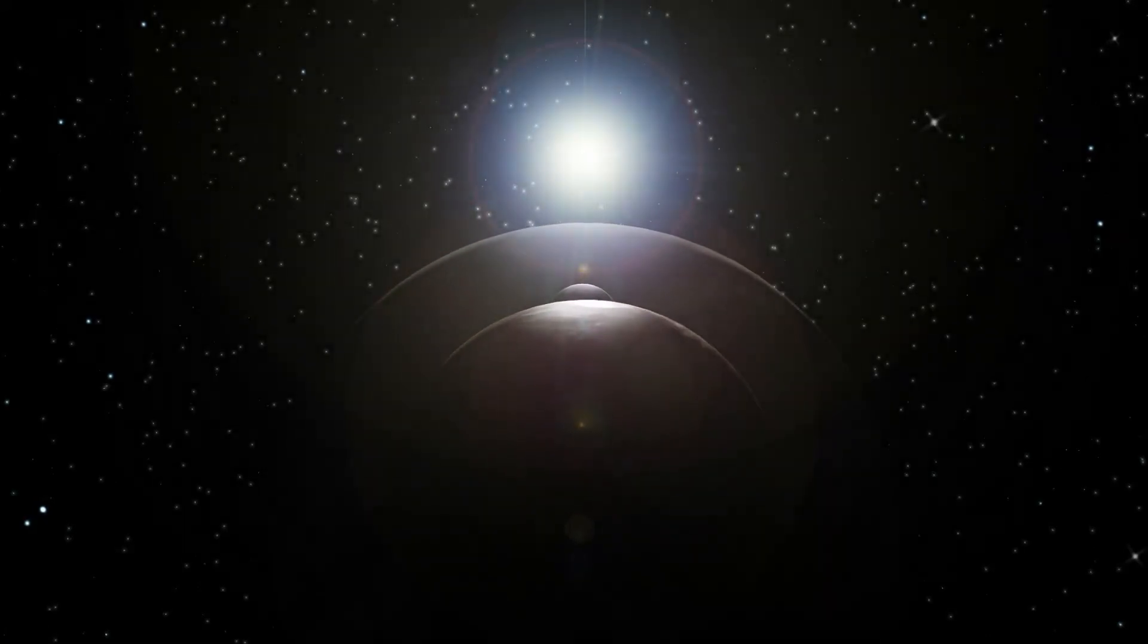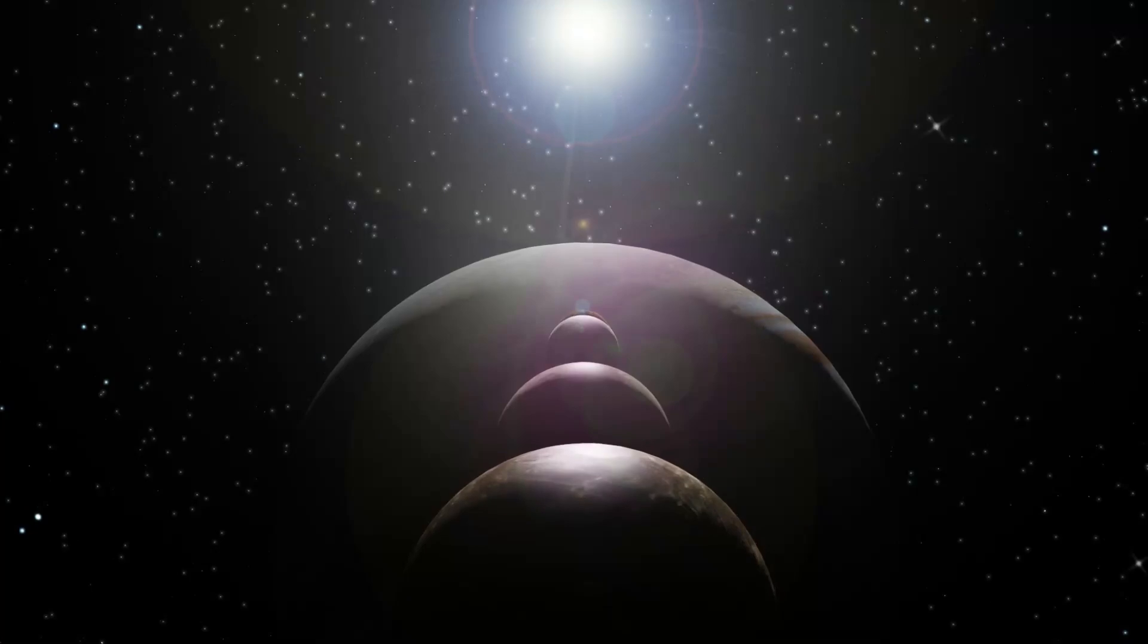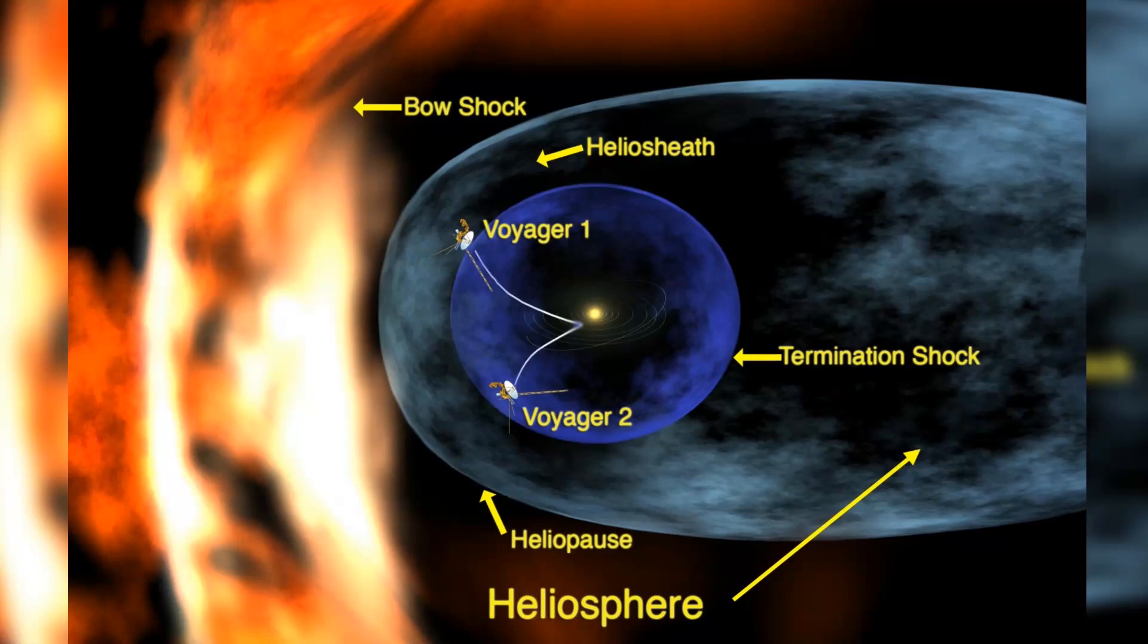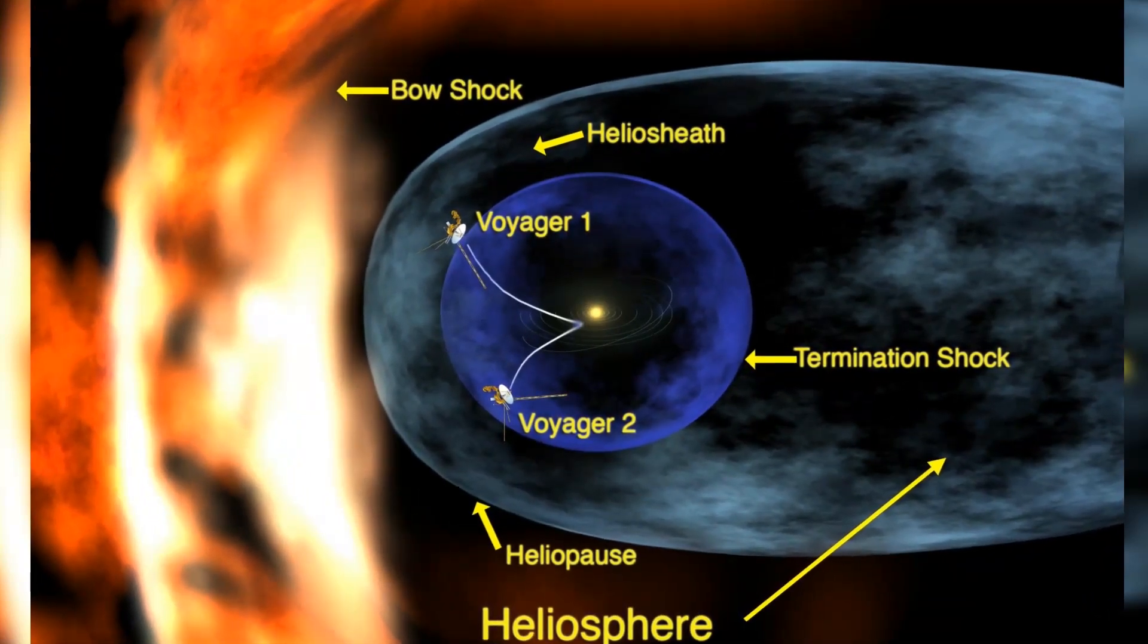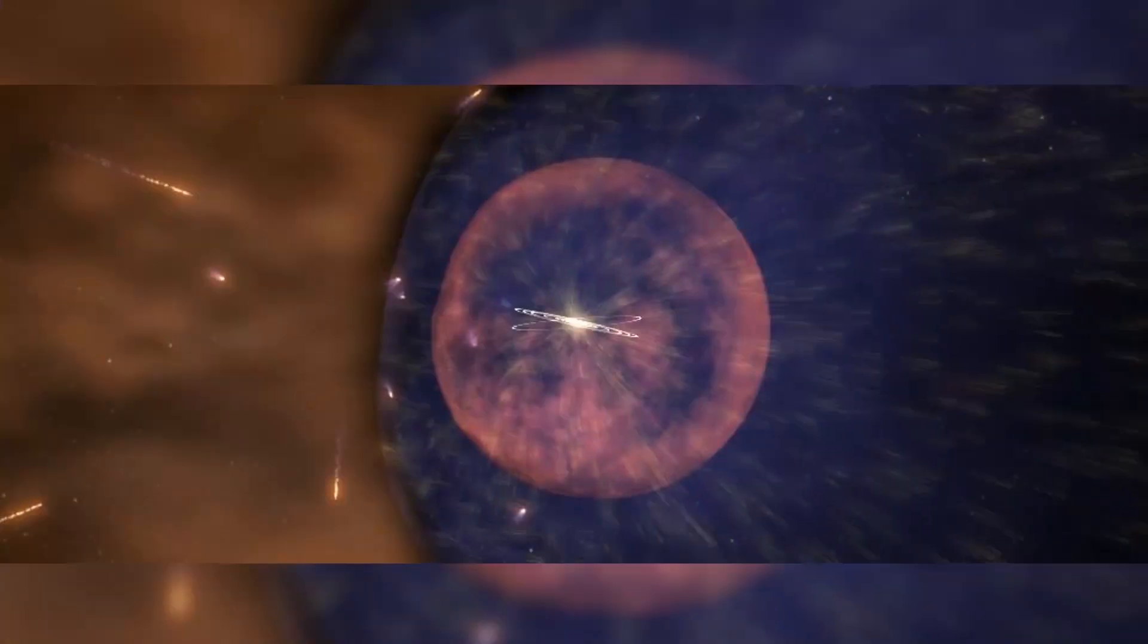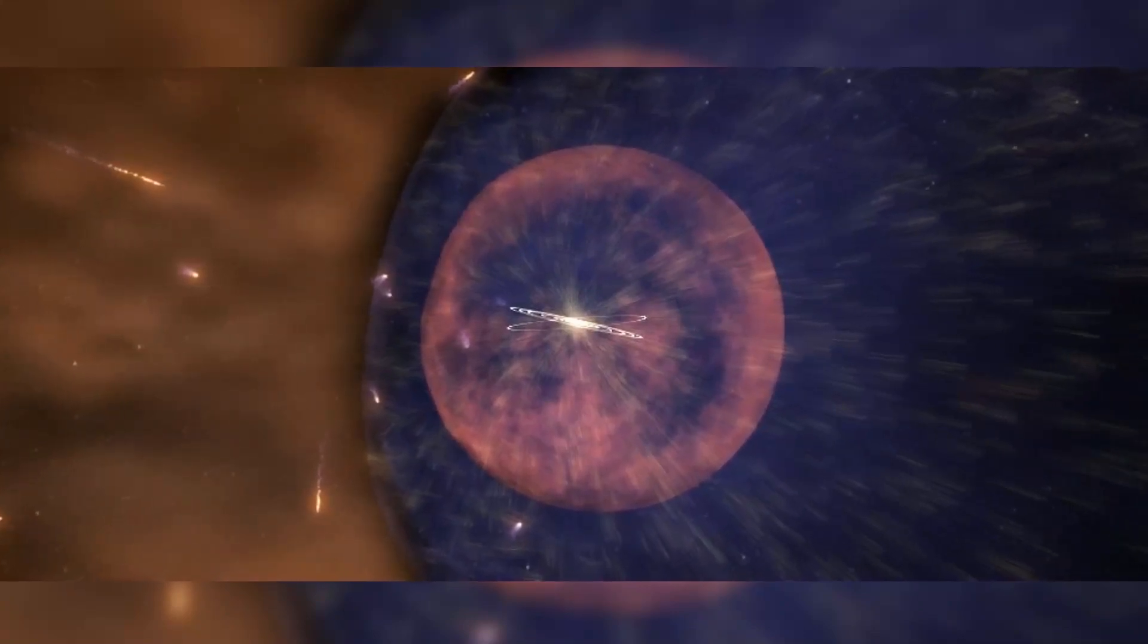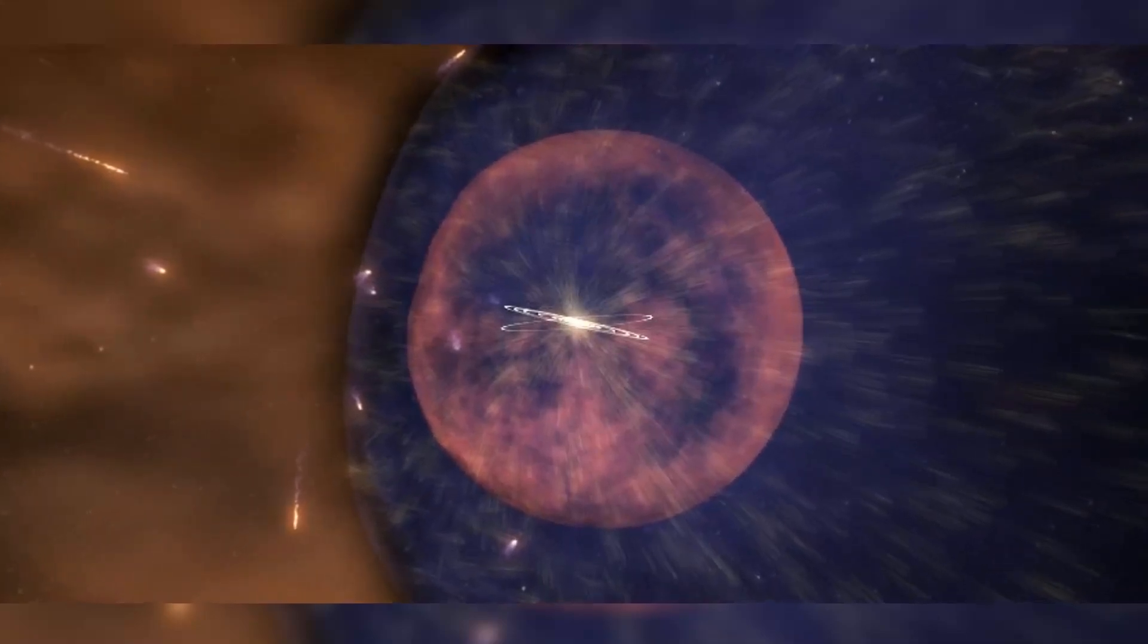Four years ago, the Voyager 2 probe became just the second human-made object in history to exit the solar system and officially enter interstellar space. On November 5, 2018, the craft officially left the solar system as it crossed the heliopause, the boundary that marks the end of the heliosphere and the beginning of interstellar space. This area is the outermost region of the solar system, sometimes referred to as the bubble, and is located around 119 astronomical units from the sun.